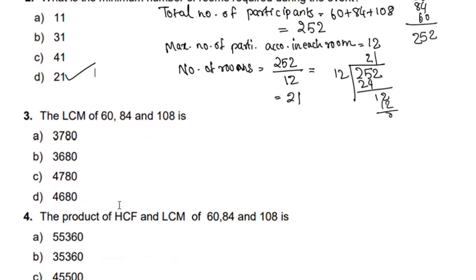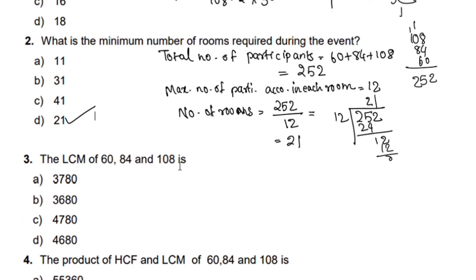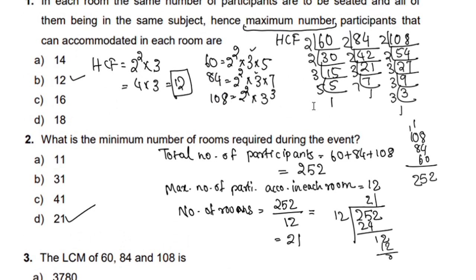The third question: find the LCM of 60, 84 and 108. We will do separate prime factorization for each. The LCM is the product of the greatest powers of all prime factors.